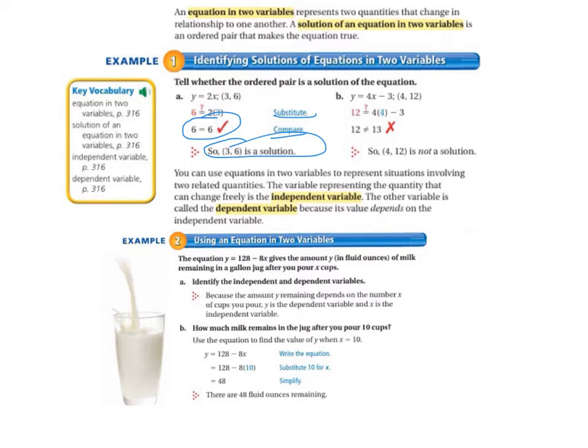Letter B: y equals 4x minus 3 is our equation, and (4, 12) is the ordered pair. So y is 12, so we put that on the left. And then we multiply 4 times x, which is 4. So that equals 16. And then 16 minus 3 equals 13. 12 does not equal 13. So (4, 12) is not a solution.